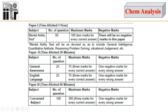In the first paper there will be a Mental Ability Test with 50 questions and a total of 100 marks. There will be no negative marking for any question in this part. The subjects for this test will be general intelligence, quantitative aptitude, reasoning, problem solving, and situational judgment.